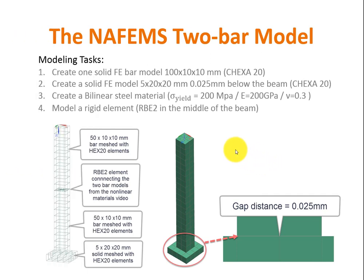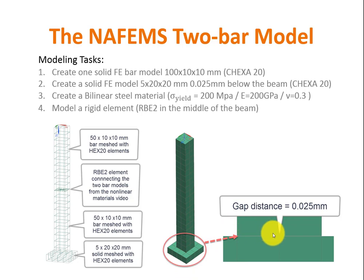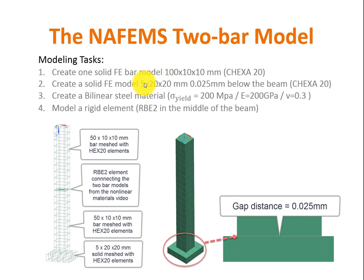This is how I made my NX model. The NAFEMS book uses beam elements, but I use solid elements. First we have one part which is the beam that will be in contact. It has a length of 100 mm and the cross section is 10 x 10 mm. Then I have a lower part with an offset from the beam of 0.025 mm, which is the gap distance. In the middle of this part I created an RB2 element, and in the master node I will apply an enforced displacement that enforces contact between the beam and the bottom plate. I used hex 20 elements with size 5 mm.